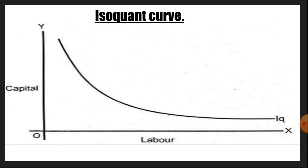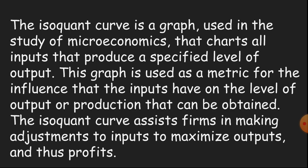This is the diagram of the isoquant curve. The isoquant curve is a graph used in the study of microeconomics that charts all inputs that produce a specified level of output. This graph is used as a metric for the influence that inputs have on the level of output or production. The isoquant curve assists firms in making adjustments to inputs to maximize outputs and thus profits.